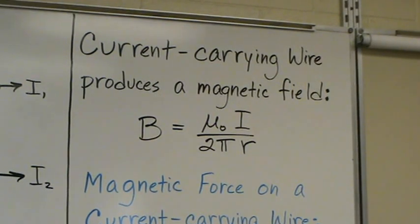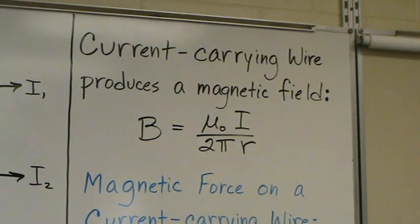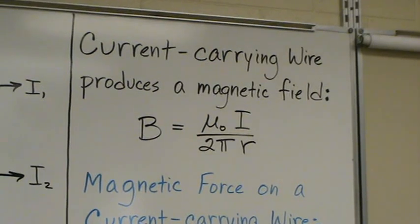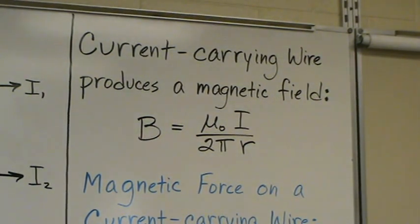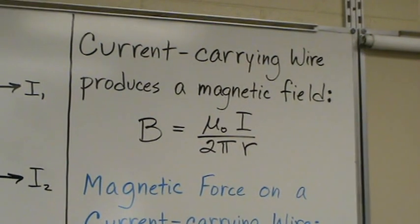We've learned that a current carrying wire will produce a magnetic field and the magnitude of that magnetic field is found with that equation. B equals the permeability constant times the current to the wire divided by 2π and the distance that the magnetic field is from that wire.